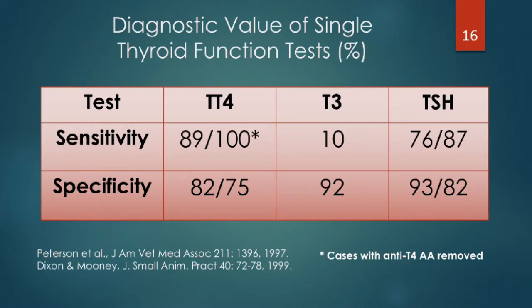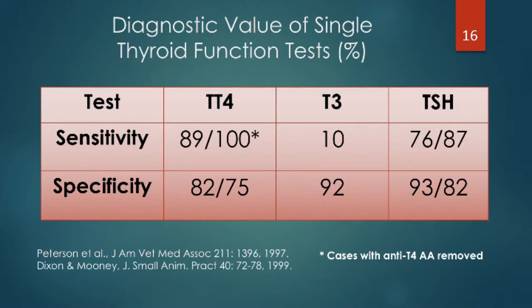For TSH, it's important to note that we're looking for an elevation, and an elevated TSH is only 76% to 87% sensitive. In human medicine, TSH alone is measured, and if it's elevated the patient is probably hypothyroid — it's close to 100% sensitive in humans. In dogs it's much lower, and in some studies as low as 65%, meaning TSH may not be elevated in certain cases. The specificity, however, is higher, so we use TSH to confirm hypothyroidism more than as a screening test.